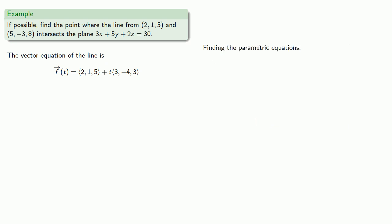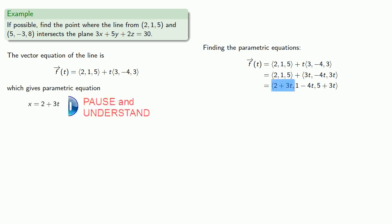And we can find the parametric equations, so our vector equation can be simplified. The components of the vector are the same as the coordinates of the point. So we can find x = 2 + 3t, y = 1 - 4t, and z = 5 + 3t.